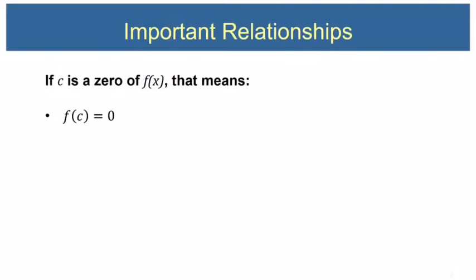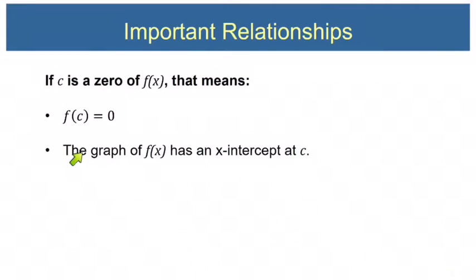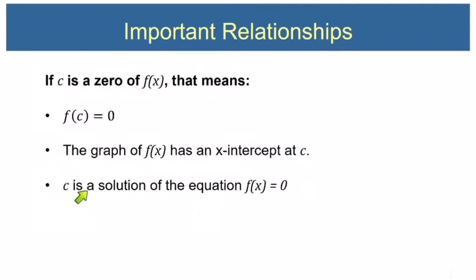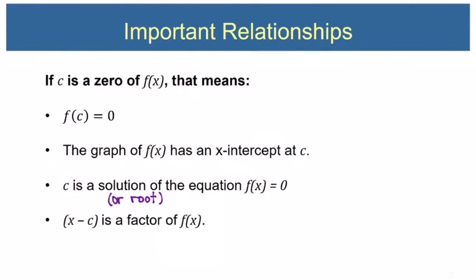Before we get started with our two theorems, let's remember some important relationships we've been learning throughout this chapter. If we have a number c that is a zero of f(x), that means f(c) equals 0 — that's the definition of a zero. It means the graph of f(x) has an x-intercept at c, that c is a solution of f(x) = 0, sometimes called a root, and that x minus c is a factor of f(x).